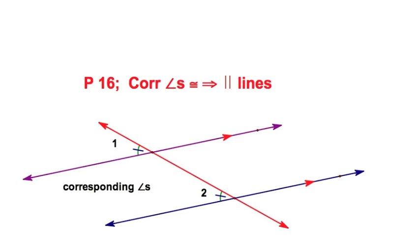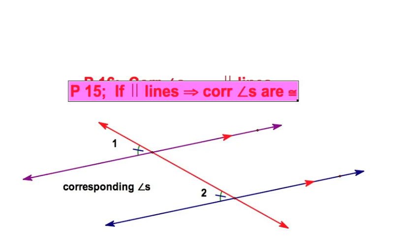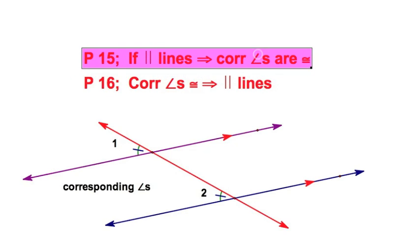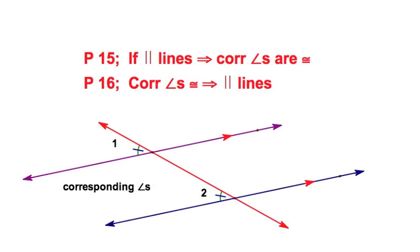Let's put them up there together so you can see the comparison. It's all about direction: starting with parallel lines makes corresponding angles congruent; starting with corresponding angles congruent makes the lines parallel.